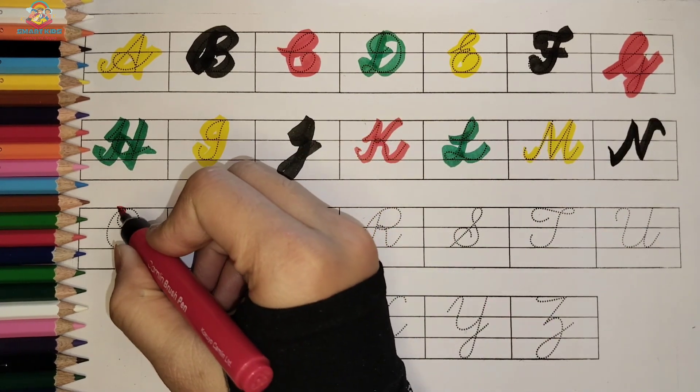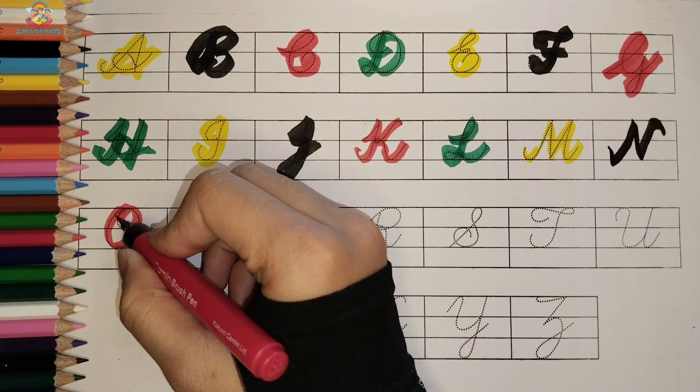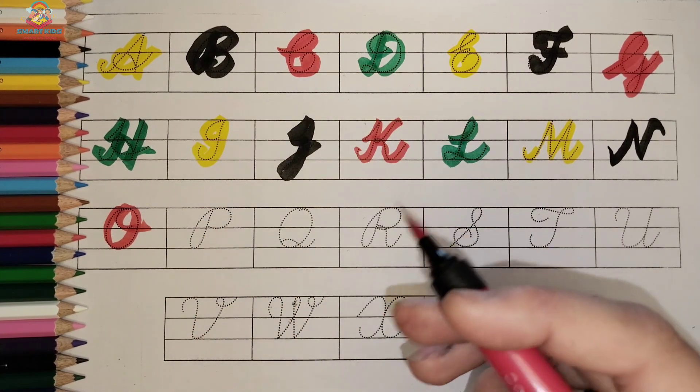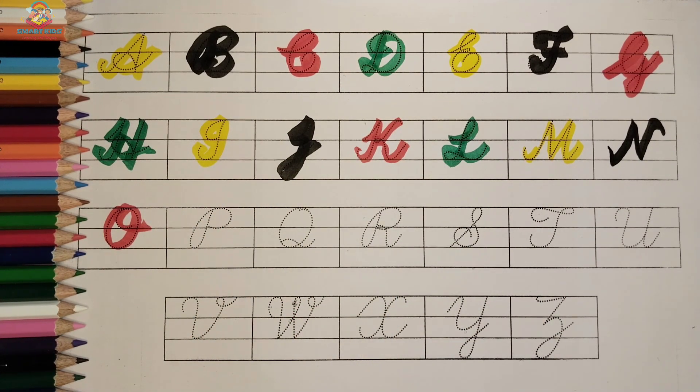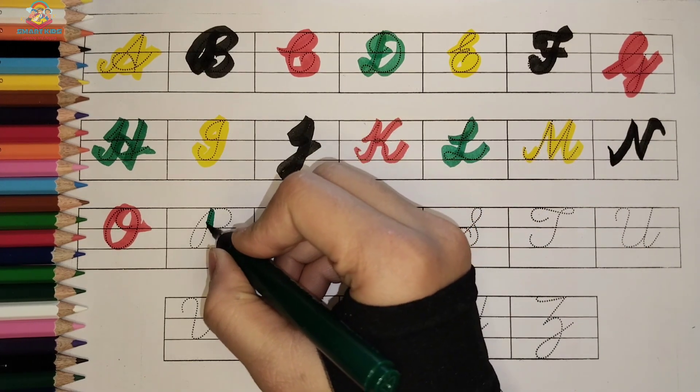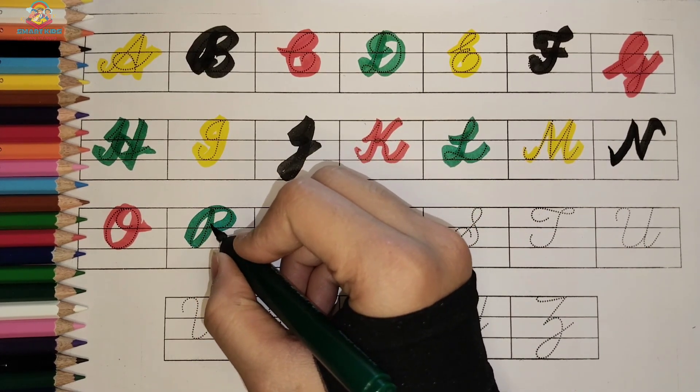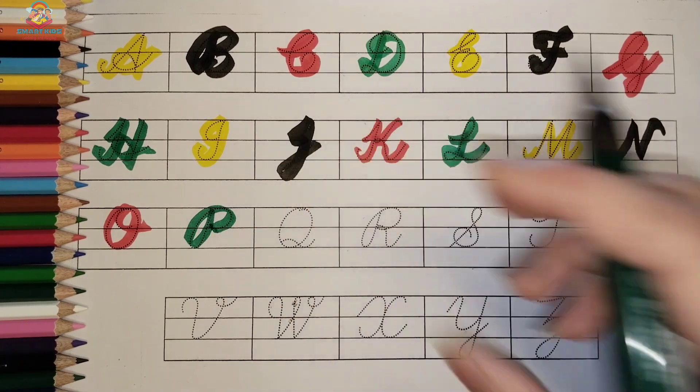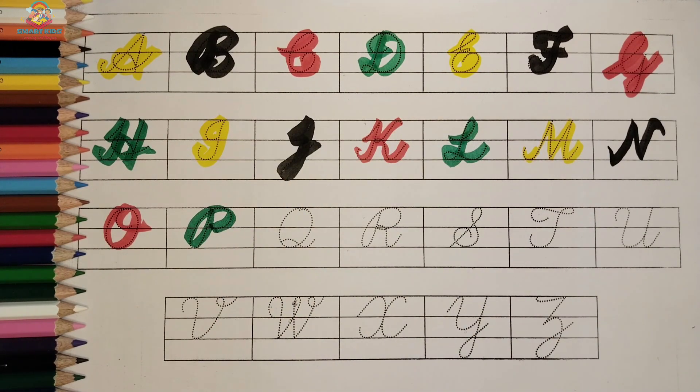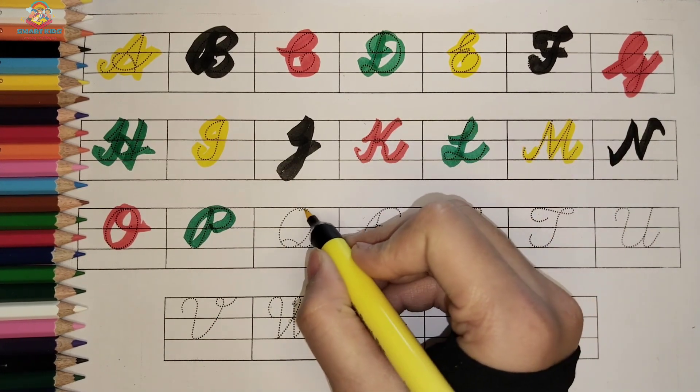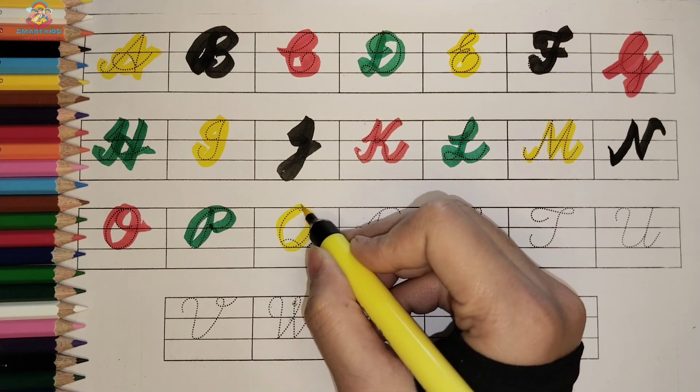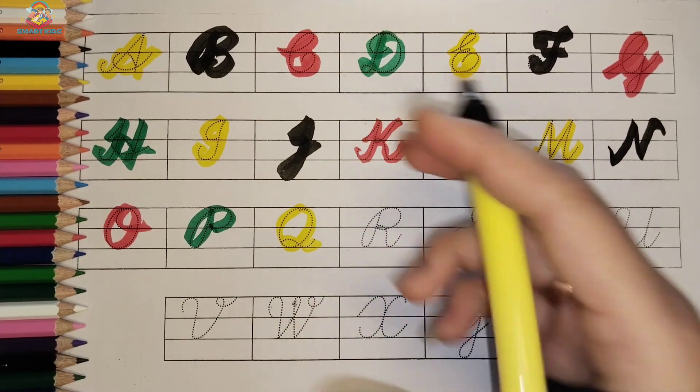O, O for Orange, O for Orange, red color. P, P for Parrot, P for Parrot, green color. Q, Q for Quill, Q for Quill, yellow color.